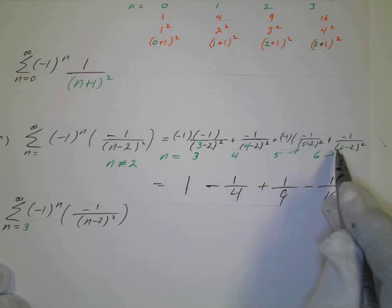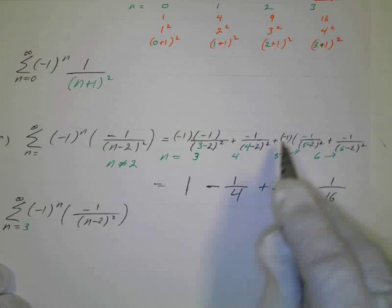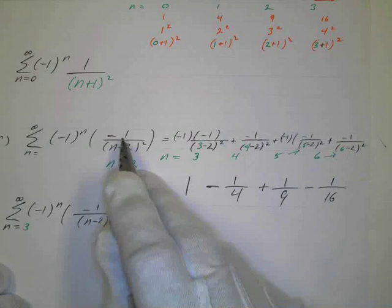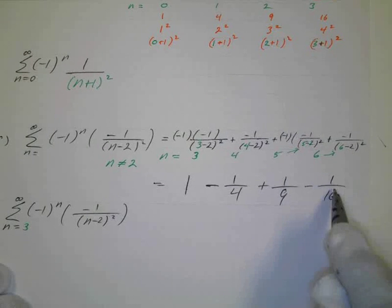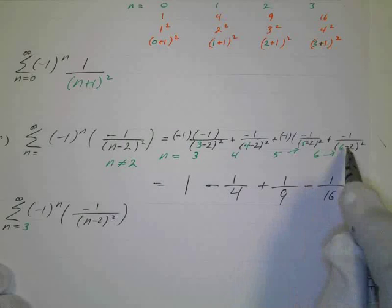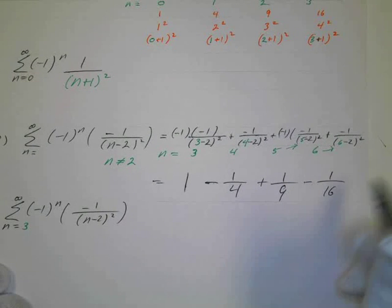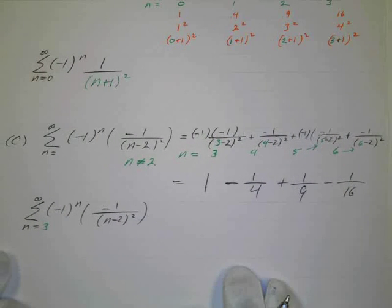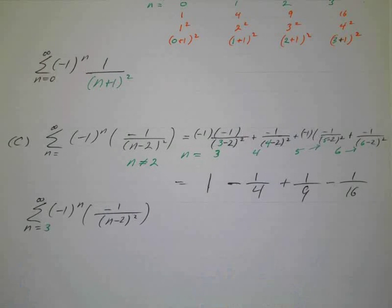And the last one, when n is 6, that's going to be a positive. This negative times a negative gives me a positive. And then when it's positive, because there's a negative sign there, it gives me a negative. And then 6 minus 2 is 4, 4 squared is 16. So it does generate that series. So the index is going to be 3. So a little bit of work on those, just for one problem.